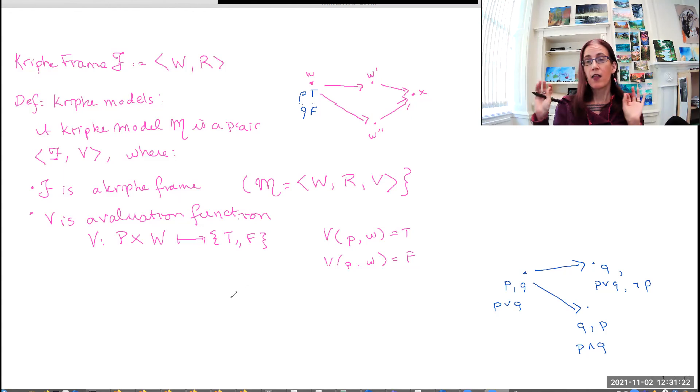So there's your Kripke models. The valuation gives us information about which atoms are true at which worlds. Now you're probably wondering, how do we get from this to the more interesting questions of which sentences are necessary or possible? I don't just want to know what are the basic facts that are going on at a particular world.